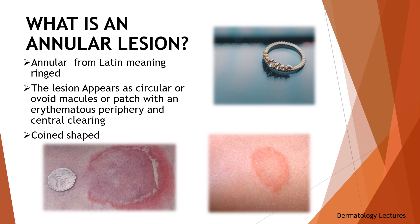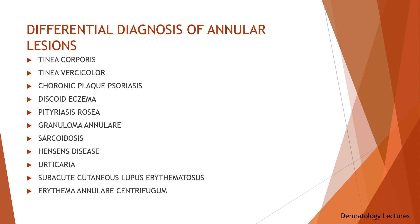What is an annular lesion? The term annular stems from the Latin word annulus meaning ringed. They are also known as coin-shaped lesions. The lesions appear as circular or ovoid macules or patches with an erythematous periphery and central clearing. Annular lesions are extremely common and striking in appearance but can also be misleading, so it's very important to know the differential diagnosis of these lesions.